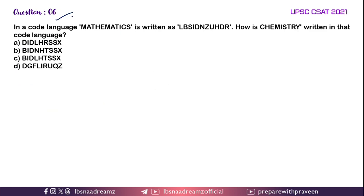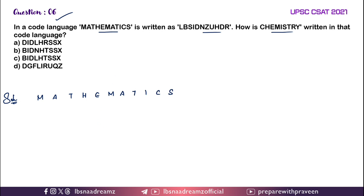Question 6: In a code language, MATHEMATICS is written as LBSIDNZUHDR. How is CHEMISTRY written in that code language? For MATHEMATICS, the given code is L, B, S, I, D, N, Z, U, H, D, R.